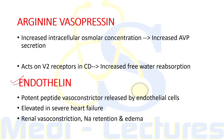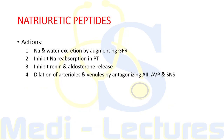Endothelin is a potent peptide vasoconstrictor released by endothelial cells. It is elevated in severe heart failure and contributes to renal vasoconstriction, thereby leading to sodium retention and edema via the mechanism of renal vasoconstriction already discussed.